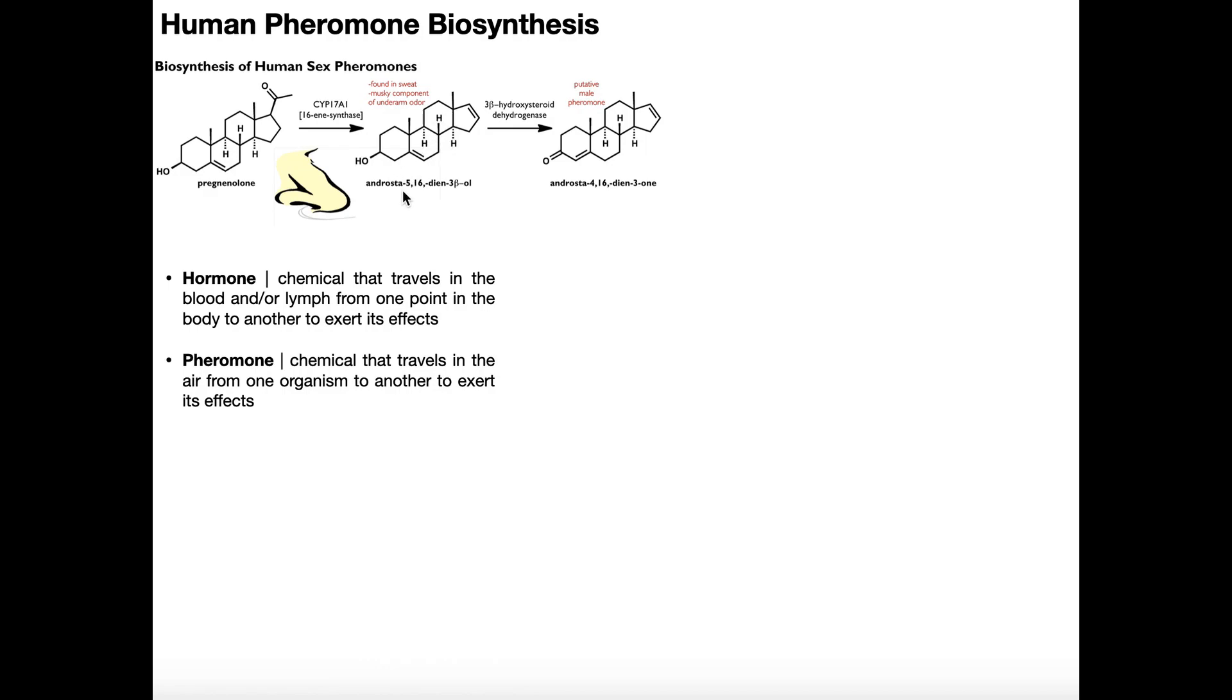This is called androsta-5,16-dien-3-beta-ol. Now the numbers make this very complicated, so generally we're just going to shorten it to androstadienol. Androstadienol. It's the musky component of underarm odor.